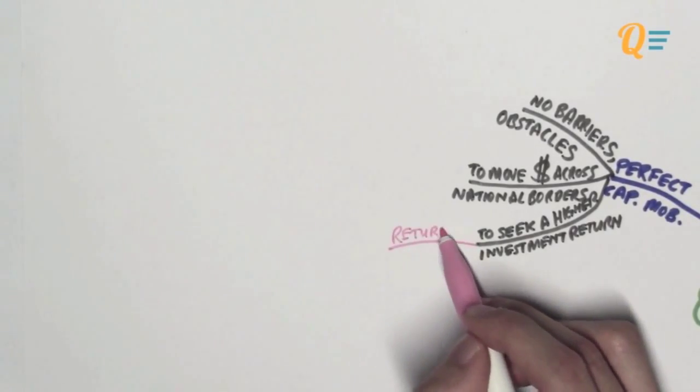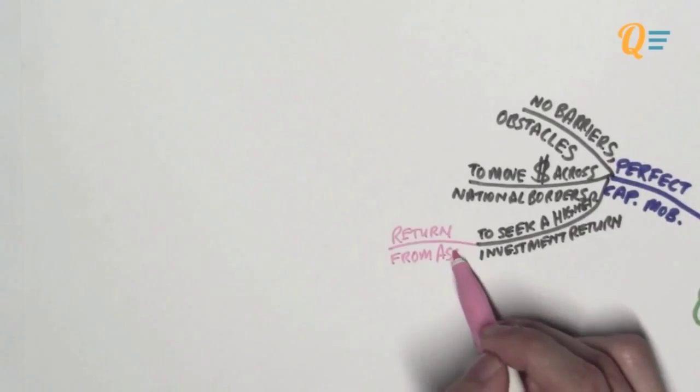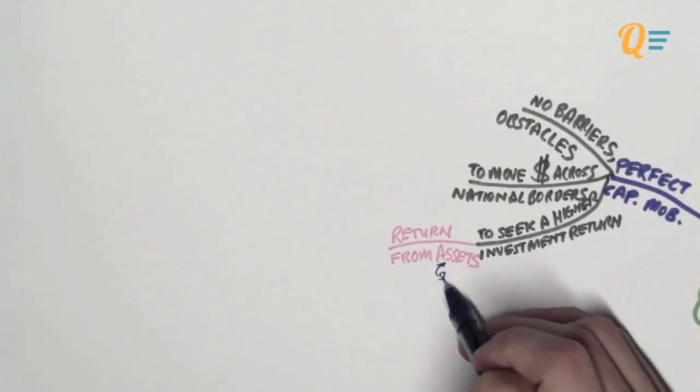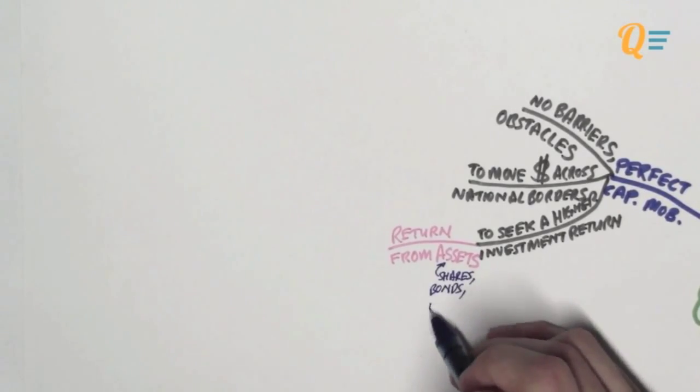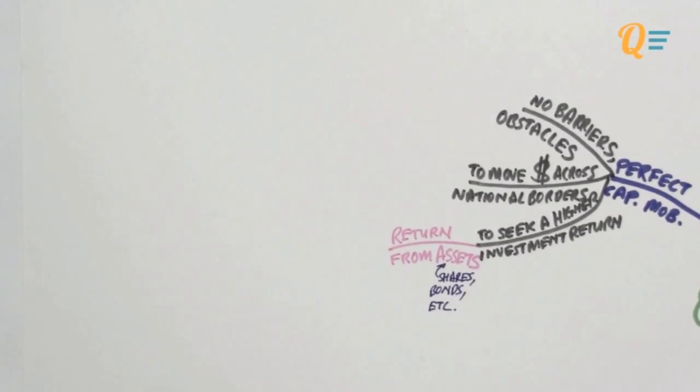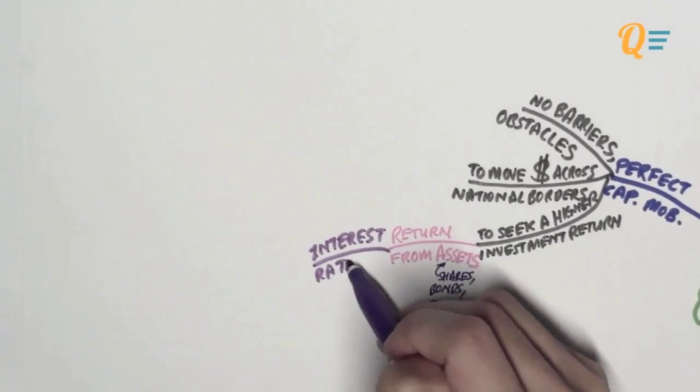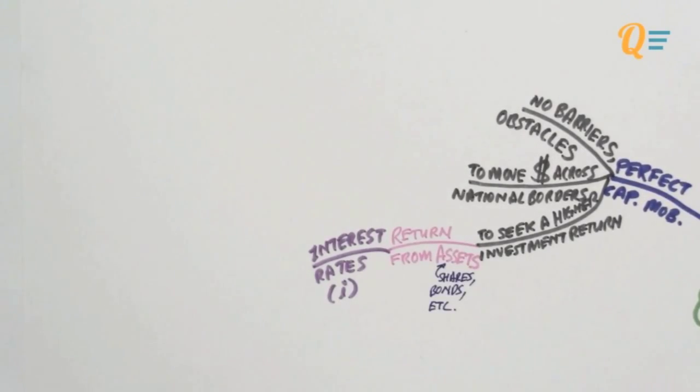So what does it mean to seek a higher investment return? Well, investment return here simply refers to returns from assets that you invest your money in. So assets could be things like shares or equity, bonds, etc. So how do we measure investment return? Well, we're going to be using the interest rates level to determine the level of investment return. So it's quite simple. You just have to use the interest rates.